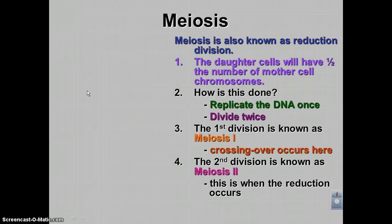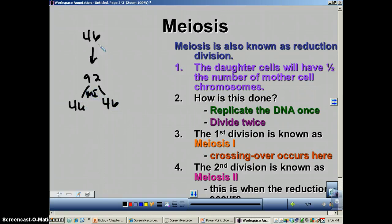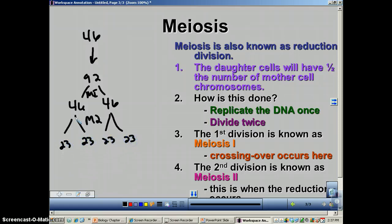Remember in the diagram: we went from 46 to 92 to 46 to 23. Notice that meiosis number one goes from 92 back to 46 — so during meiosis number one, we didn't really reduce the number, we're still at the same. It's during meiosis number two where you get the reduction down to 23 and 23.